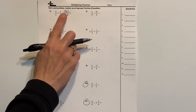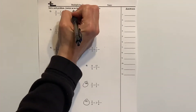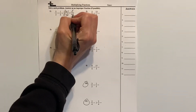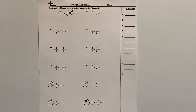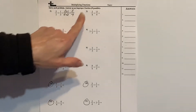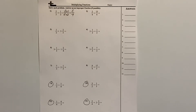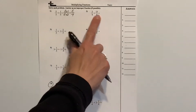We're multiplying the numerators: 5 times 1 is 5. Then we're multiplying the denominators: 2 times 2 is 4. Now when I look at that, I know that's an improper fraction — it's more than one whole. How do I know that? Because when the numerator and denominator are the same we have one whole, so 4 fourths is one whole, and 5 fourths has 1 fourth left over.